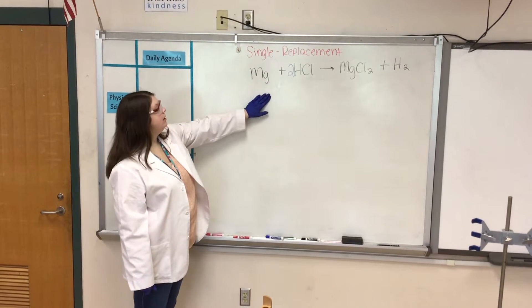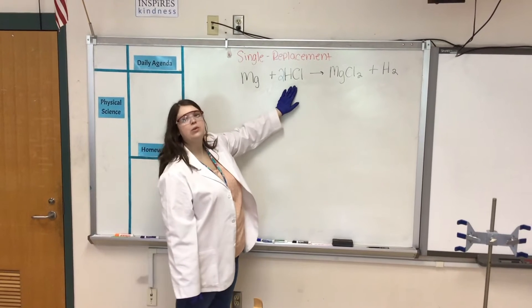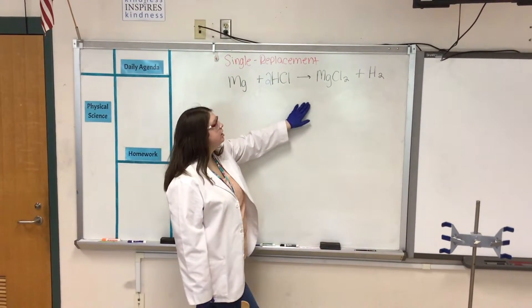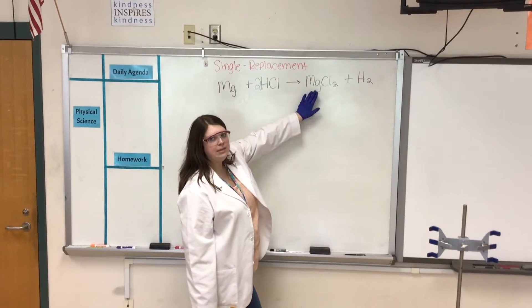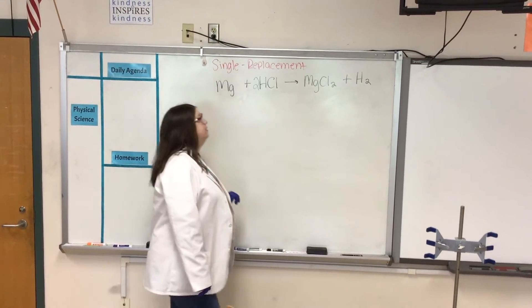Our next reaction is a single replacement reaction. In this reaction, we're going to take magnesium and react it with hydrochloric acid, and that's going to produce the ionic compound magnesium chloride along with hydrogen gas.